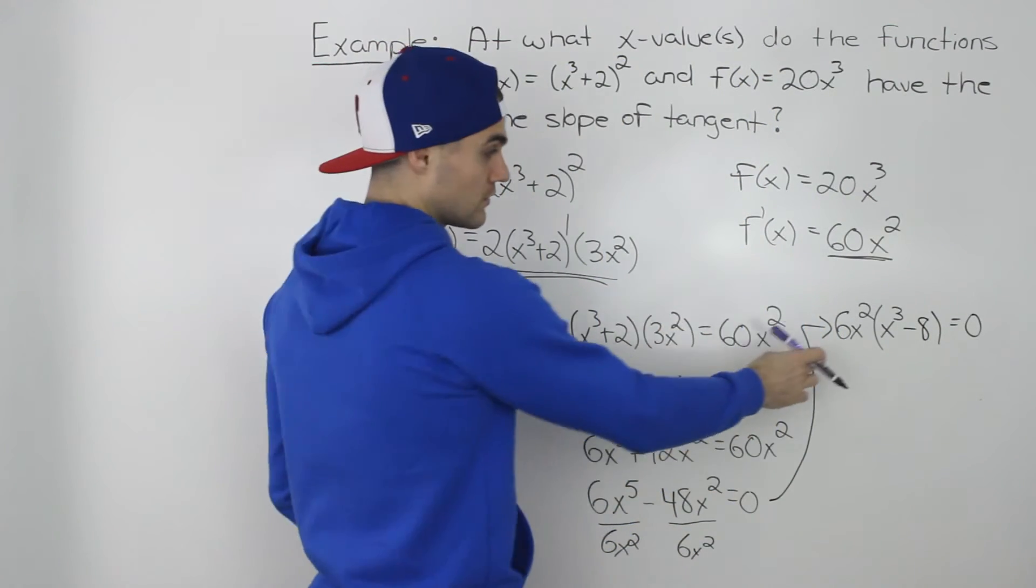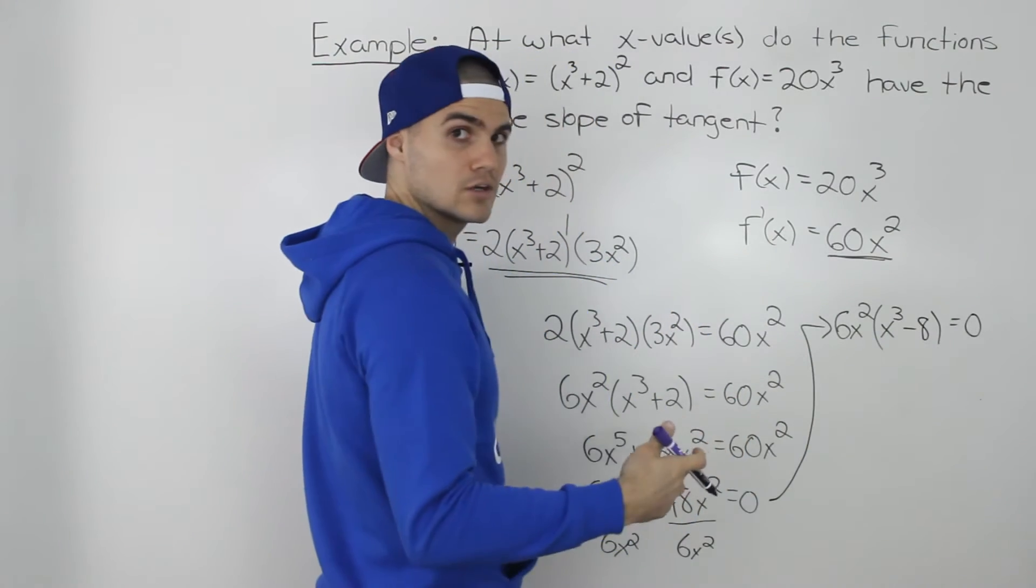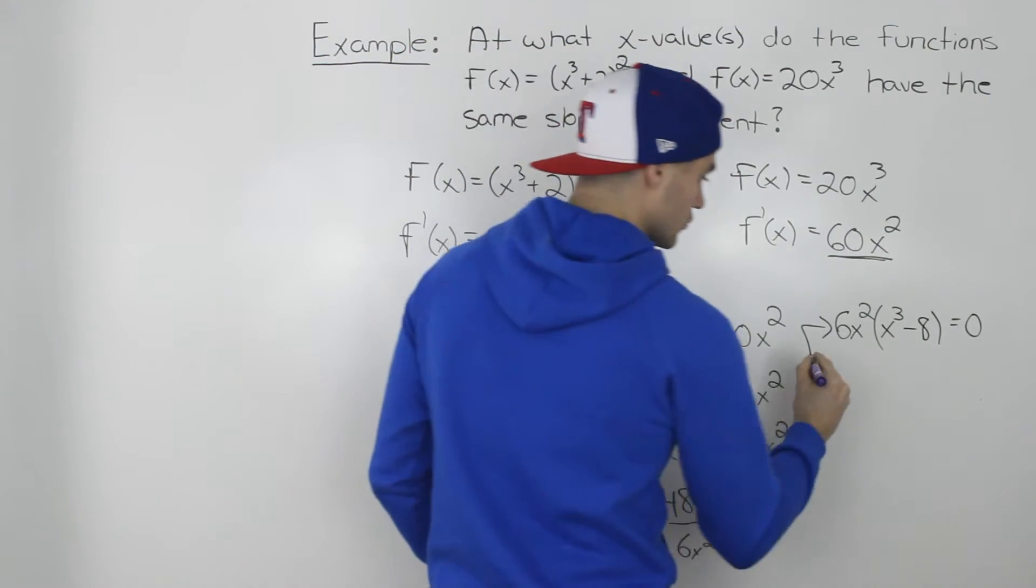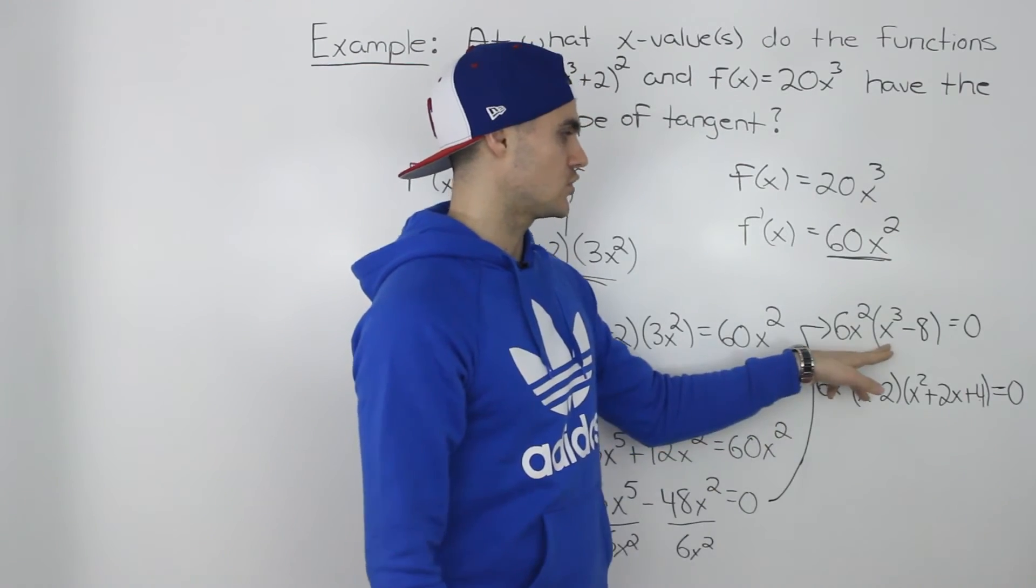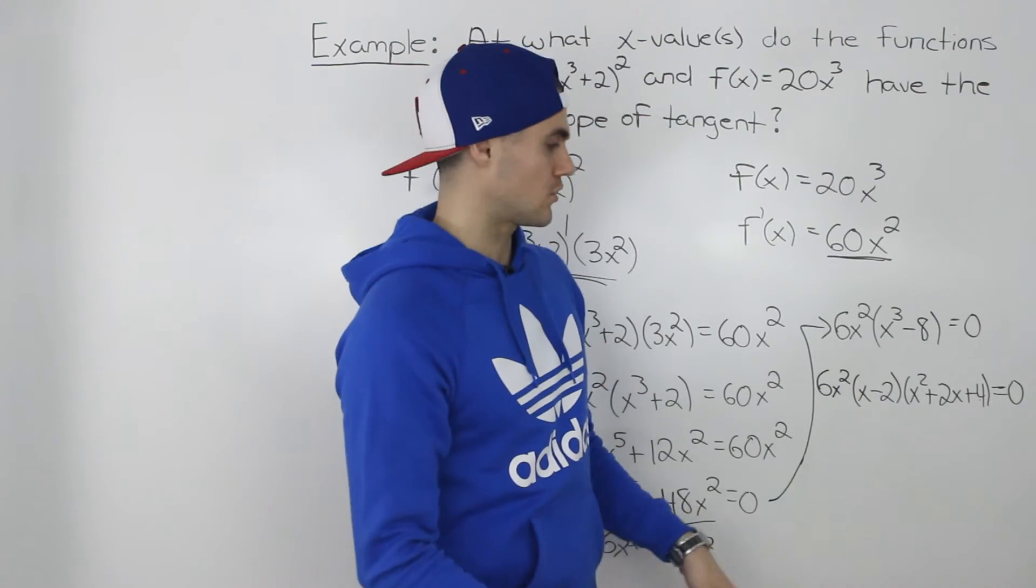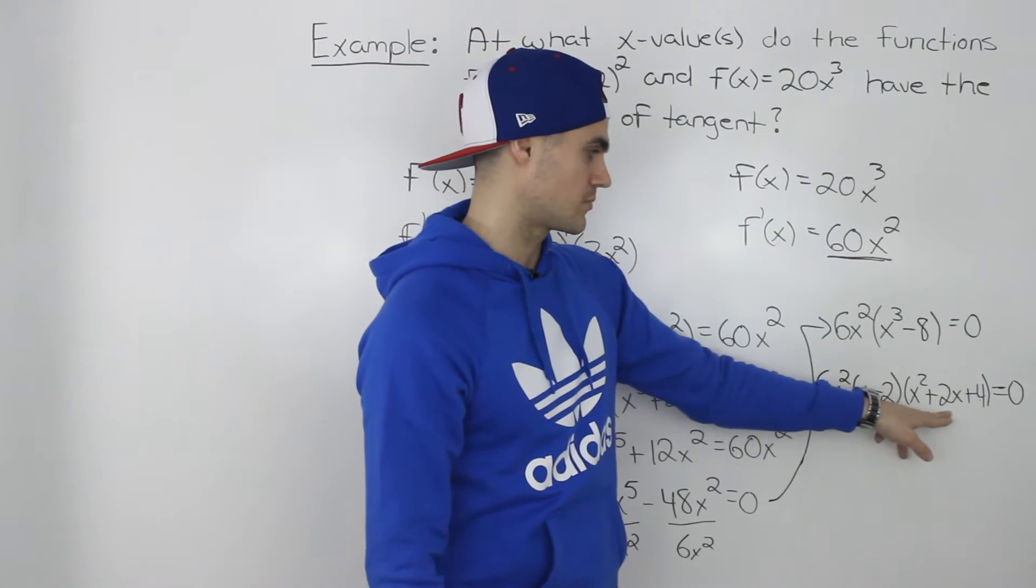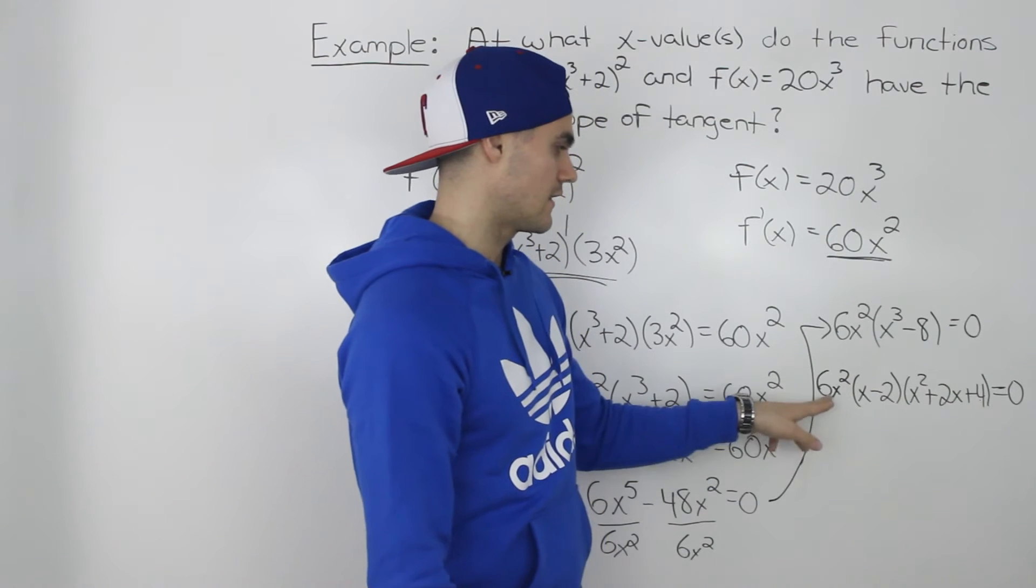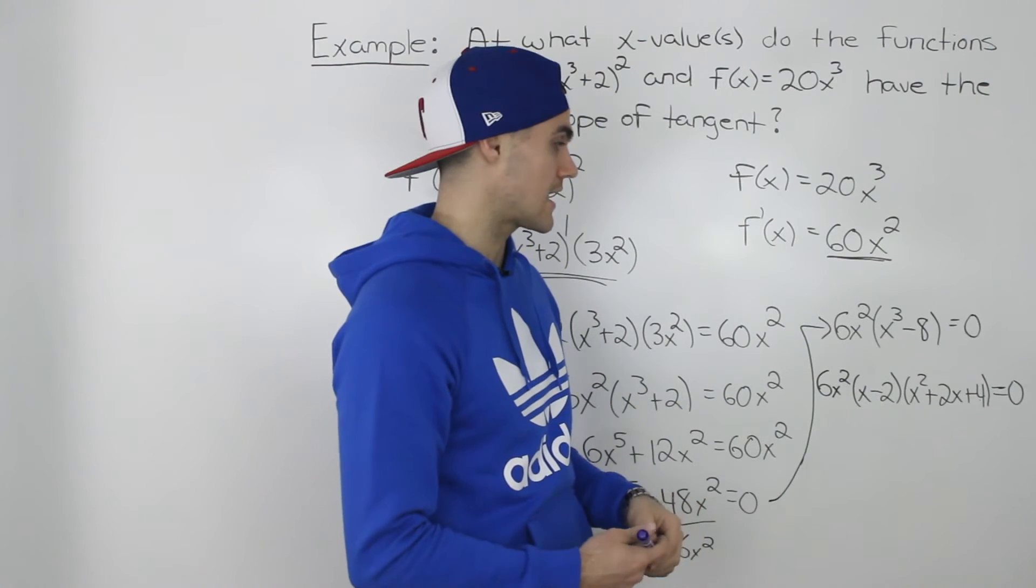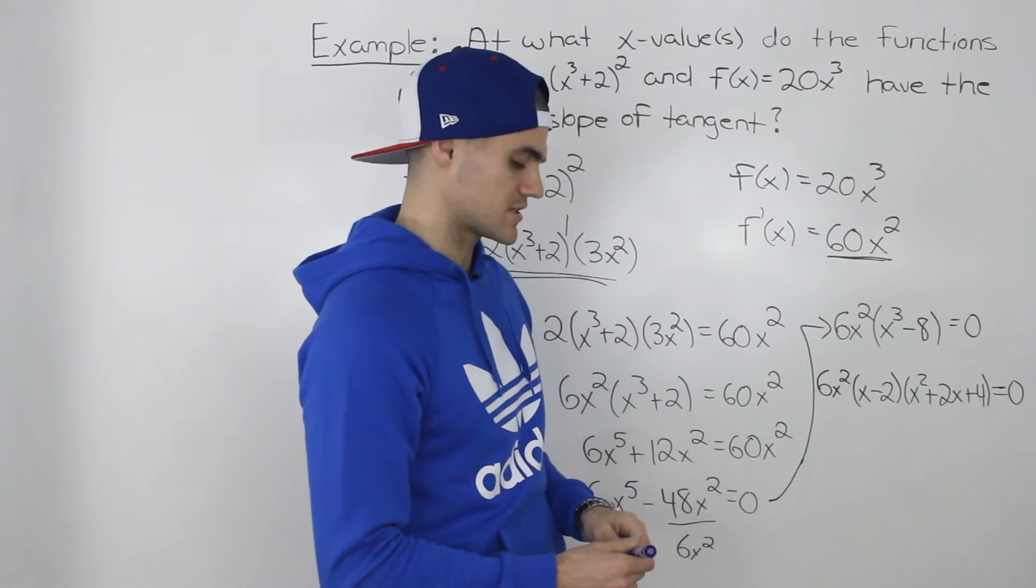And this is still all equal to 0. So then we can factor this x³ - 8. Notice how it's a difference of cubes. So then factoring that difference of cubes, x³ - 8 further, we get (x-2)(x²+2x+4). And then that 6x² stays the same. And then that's still all equal to 0.